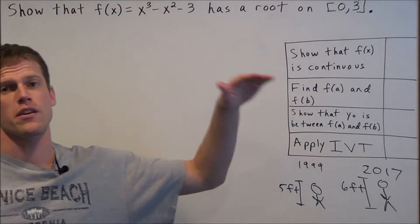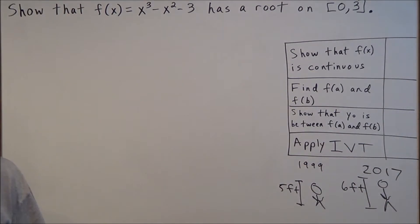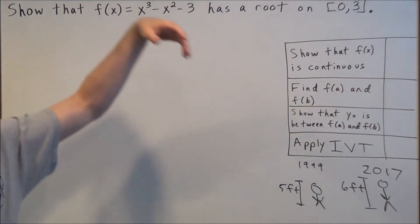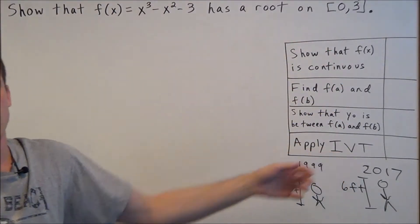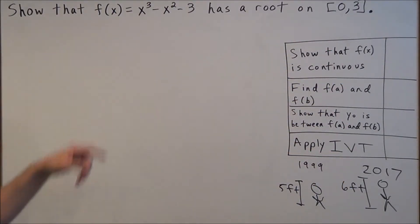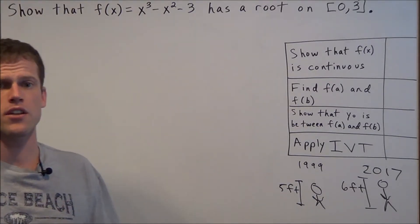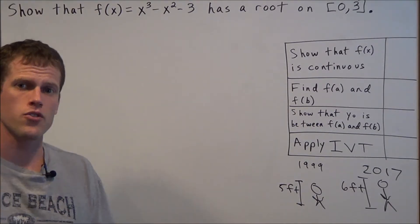But in order to use this to write a clear explanation, we need to follow these steps here. Looking at this function, how do we know that f(x) is a continuous function? Well, we could say it's a continuous function because it's a polynomial.